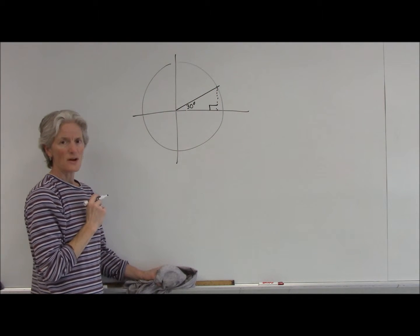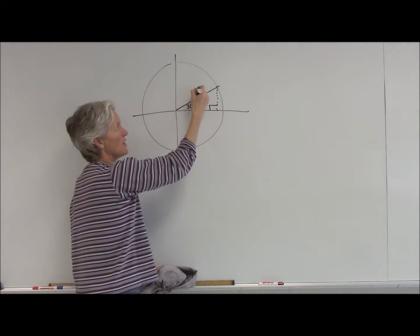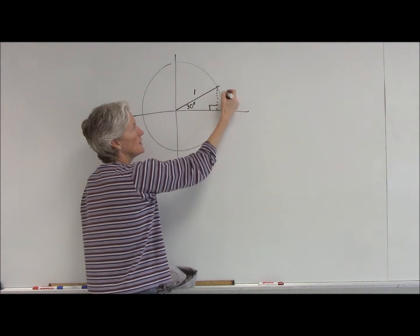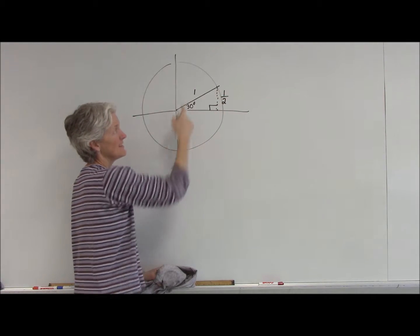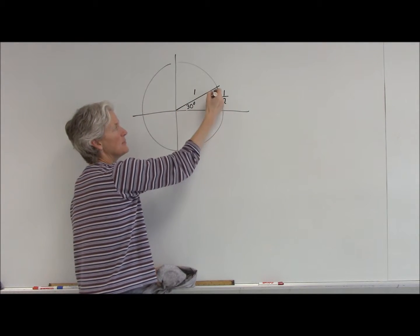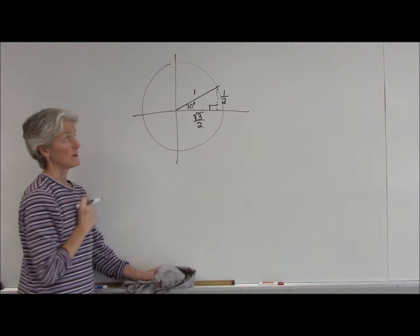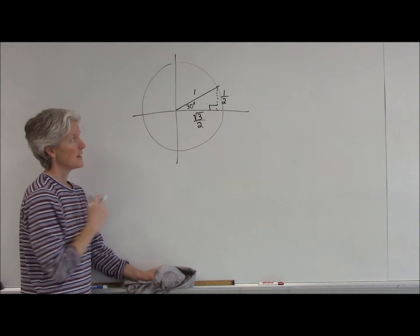30, 60, 90 triangle. I can call that 1 if I'm in my unit circle. And I know, from what I know from geometry, that opposite the 30 degree, that's half of the hypotenuse. Opposite the 60 degree is going to be half times the square root of 3.